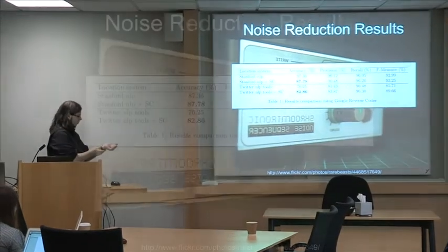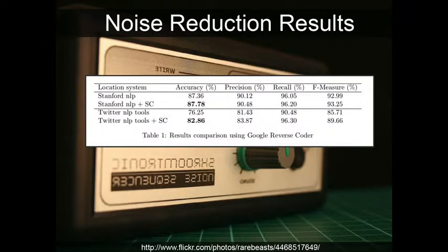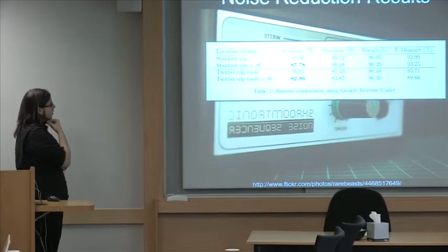Here are some results of these tools. The results are from a preliminary test using a corpus of 1,000 tweets related to last year's Japan earthquakes. In this comparison we use two different NER analyzer tools: the Stanford tool, which is a general purpose analyzer, and the Twitter tool, which is a NER analyzer specifically designed for Twitter but has worse results than Stanford.